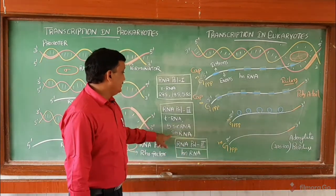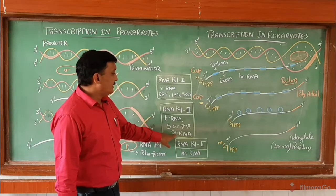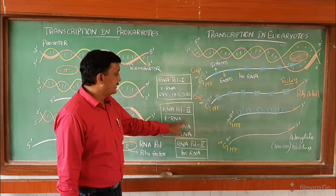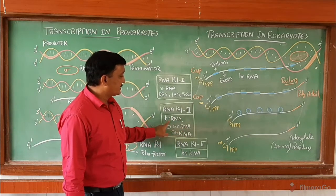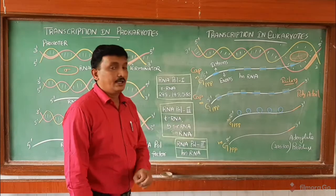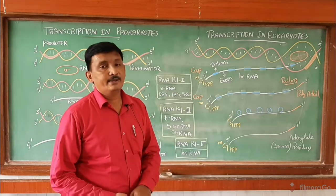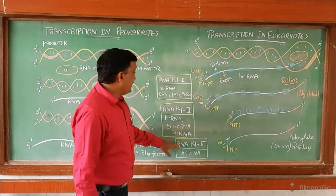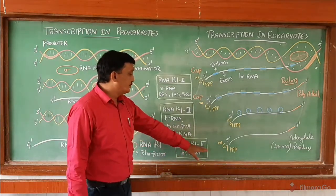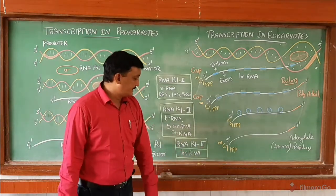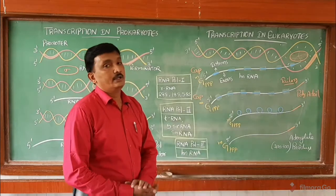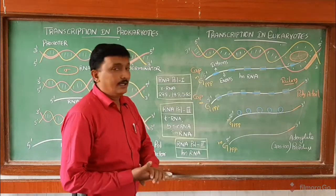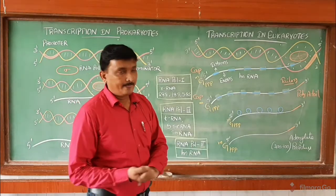RNA polymerase 3 also synthesizes smaller nuclear RNAs. These are the three types of RNAs synthesized with the help of RNA polymerase 3. Whereas RNA polymerase 2 helps in the transcription of heterogeneous nuclear RNA.